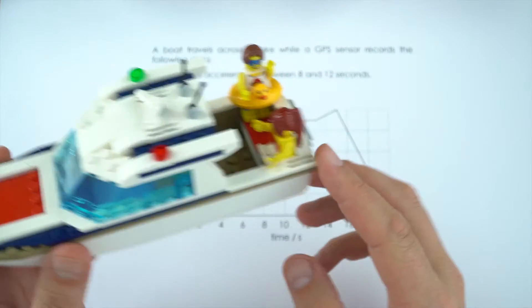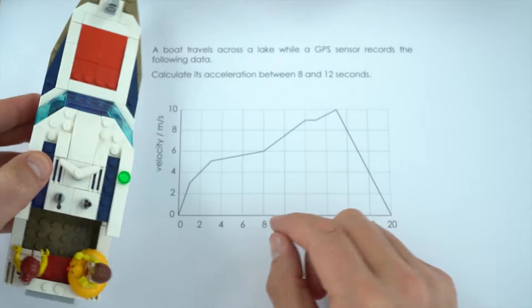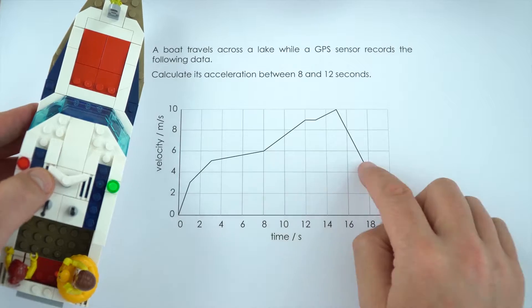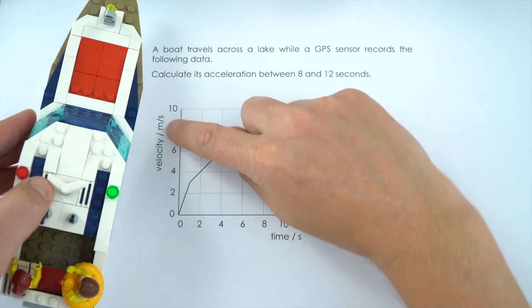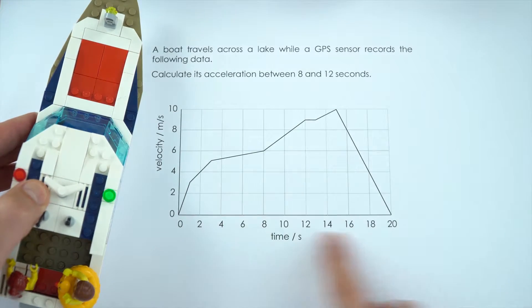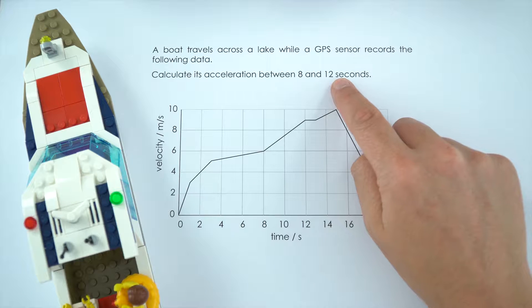This is a party boat that's been traveling across a lake and a GPS sensor has recorded the following data which is now displayed as a velocity-time graph. We've got velocity in meters per second on the side and time along the bottom, and we want to know the acceleration between 8 and 12 seconds.